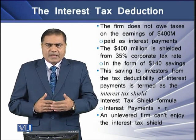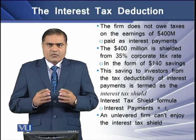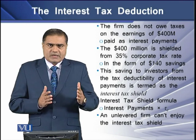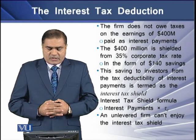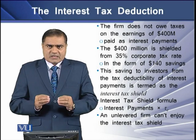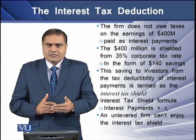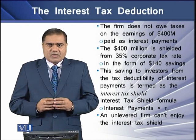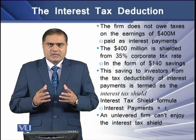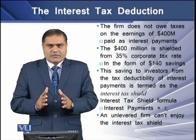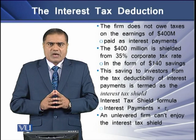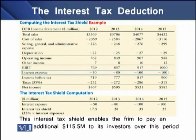To compute the interest tax shield, we multiply the tax rate by the interest expense. With an interest expense of $400 million and a tax rate of 35%, the interest tax shield comes to $140 million. It is important to note that this tax saving is available only to the levered firm. An unlevered firm cannot enjoy this tax saving because it has no interest expense and is not using any debt.